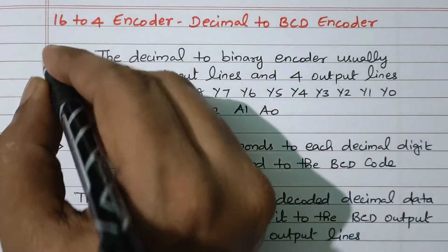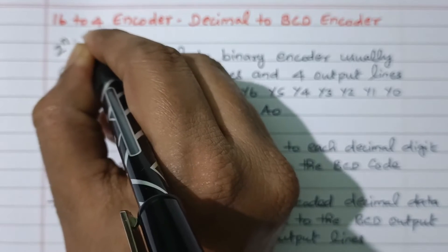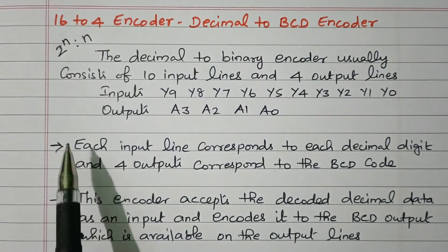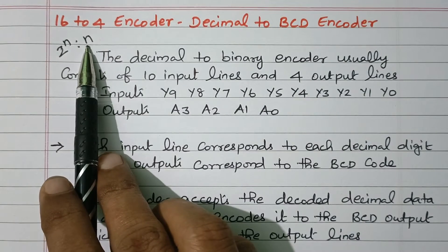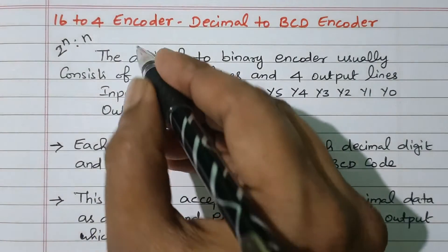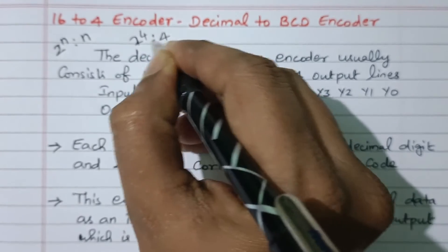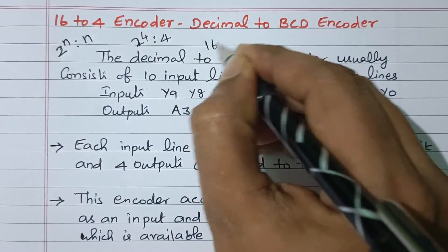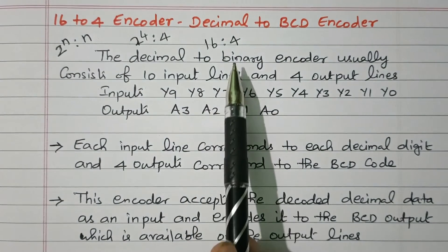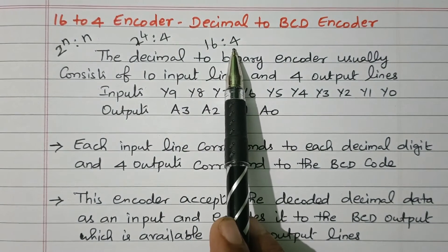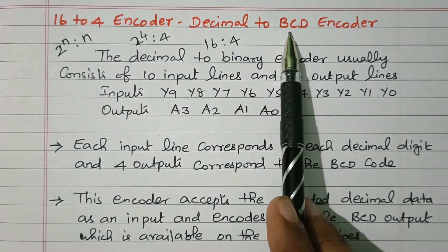We know that an encoder is nothing but 2 to the power n inputs with n number of outputs — that is the basic structure of the encoder. Here n is 4, so 2 to the power 4 is 16, giving us 16 inputs and 4 different outputs. Because of 4 different outputs, it is called a BCD encoder — binary coded decimal.